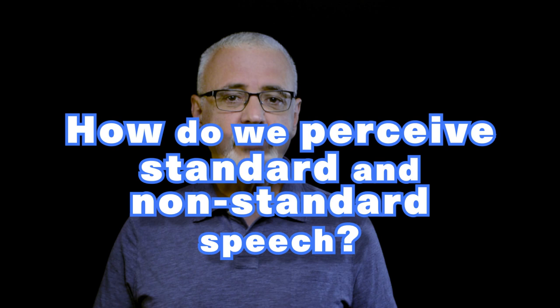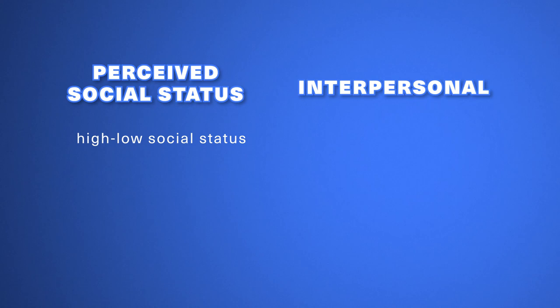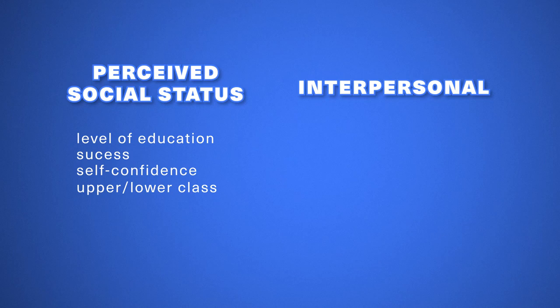People make judgments along two social psychological dimensions: a perceived social status dimension and an interpersonal dimension. Perceived social status means we perceive a speaker as having high or low social status based on perceptions of level of education, success, self-confidence, or being upper or lower class. On the interpersonal dimension, we perceive the speaker as being more or less friendly, sociable, sincere, trustworthy, and so on.